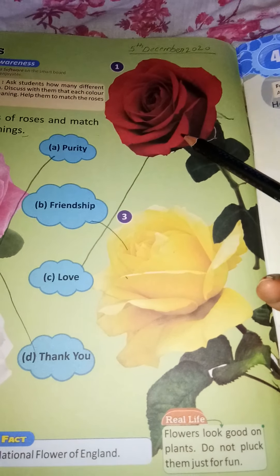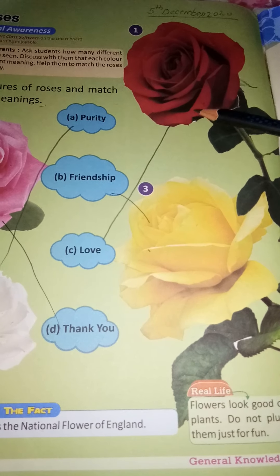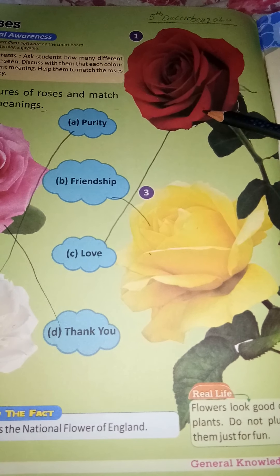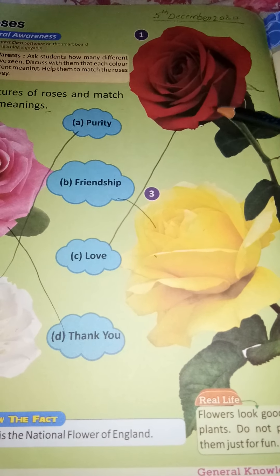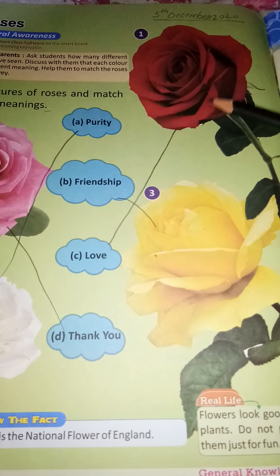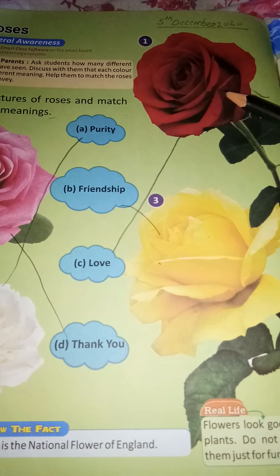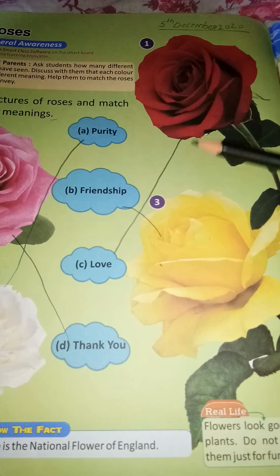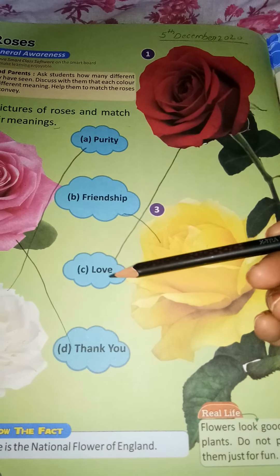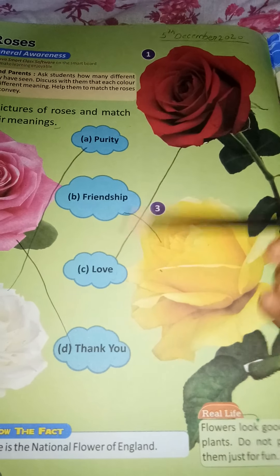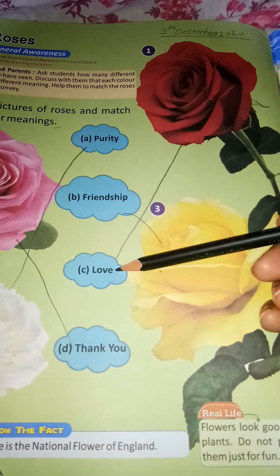This is a red rose. Red rose means — red rose indicates — red rose conveys the meaning of love. You have to match it with option C. Red rose means love.